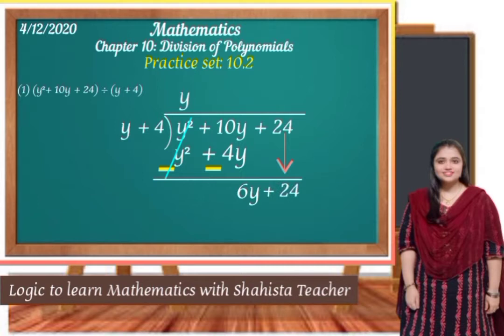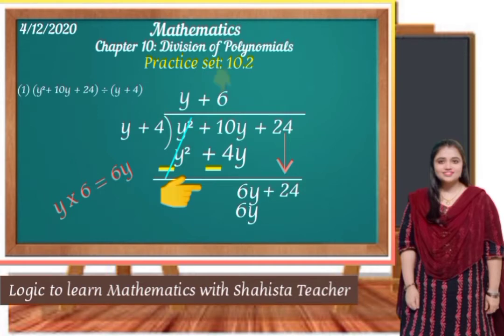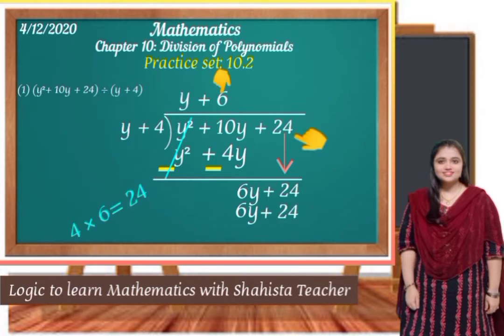Now again we will multiply. In the quotient we want 6y, so y will multiply by 6 — y into 6 equals 6y. Because 6y is a positive number, y into 6 equals 6y. And 4 into 6 equals 24, so here we write 4 × 6 = 24.